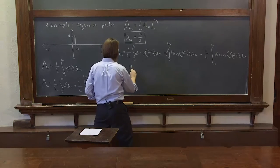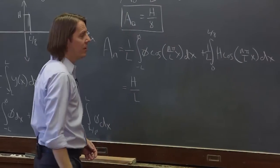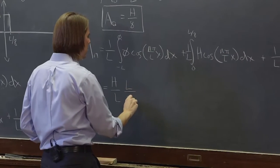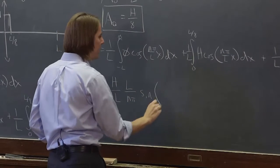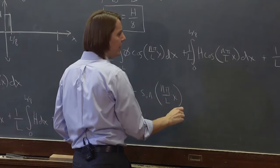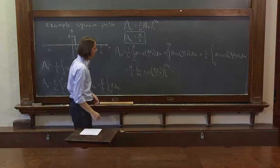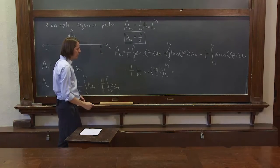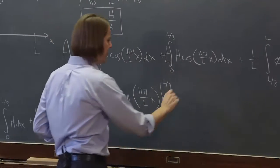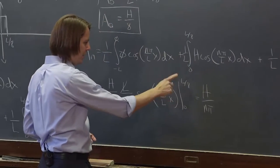So then we have h over l are the constant parts, and the integral of cosine is sine, but we have to pull out an l over n pi sine n pi over l x, and evaluate that from 0 to l over 8. So those l's cancel, it's h over n pi.